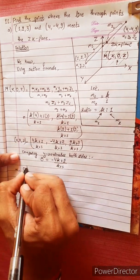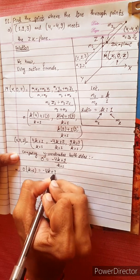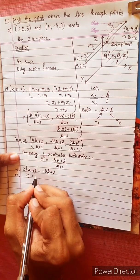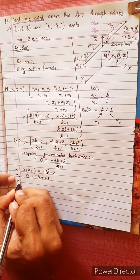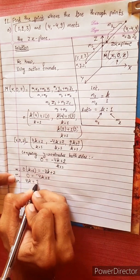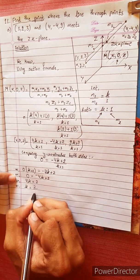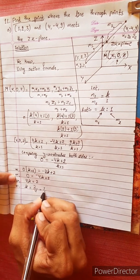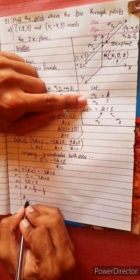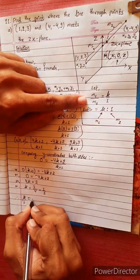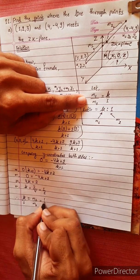So 0 equals minus 4k plus 2 divided by k plus 1, or 0 into (k plus 1) equals minus 4k plus 2, or 0 equals minus 4k plus 2, so 4k equals 2, k equals 2 by 4 equals 1 by 2. Therefore k divided by 1 equals M1 by M2 equals 1 by 2, so the ratio is 1 is to 2.